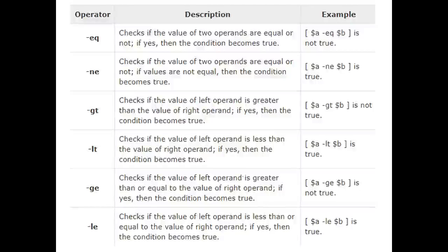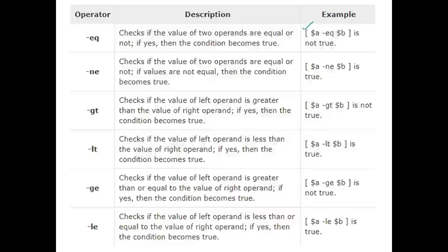Next we have relational operators. Relational operators are used for comparing one variable with another. When using relational operators, you need to place them inside square brackets. There must be a space after the opening bracket and before the closing bracket.